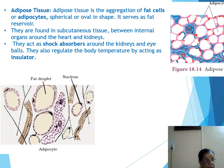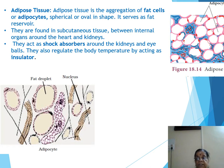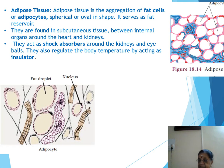For adipose tissue: fat-storing adipose tissue is found below the skin and between internal organs. The cells are filled with fat globules. Its functions include storage of fat, acting as a shock absorber, and acting as an insulator. This completes connective tissue proper.